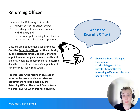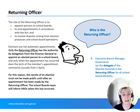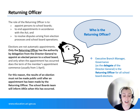Now we'll go through the important people for the appointment of school board members. The Director General of the Education Directorate is the returning officer for all school board selection processes, although this power is delegated to governance branch, which is where the school board team sits. The role of returning officer is to appoint persons and end appointments to school boards in accordance with the Act, and to resolve disputes arising from selection processes and school board operations. Any issues must be provided in writing to the returning officer within 14 days of the conclusion of the selection process, by emailing the school board's team.